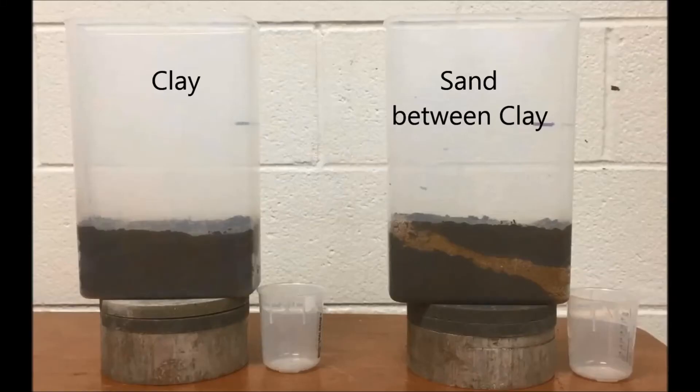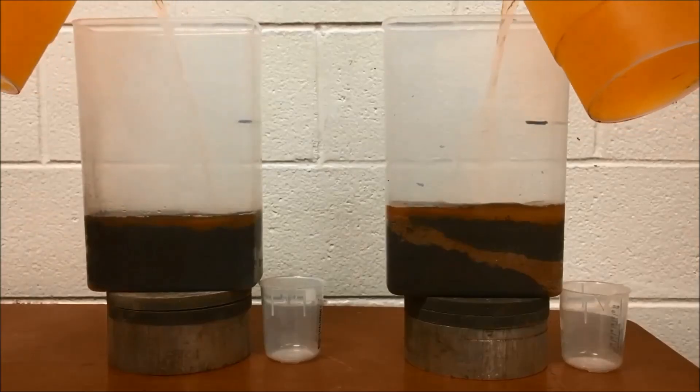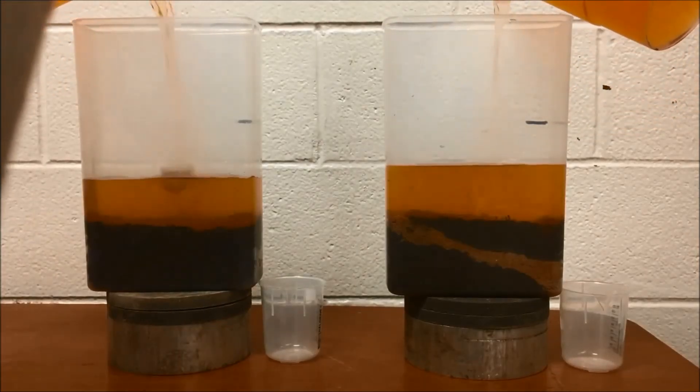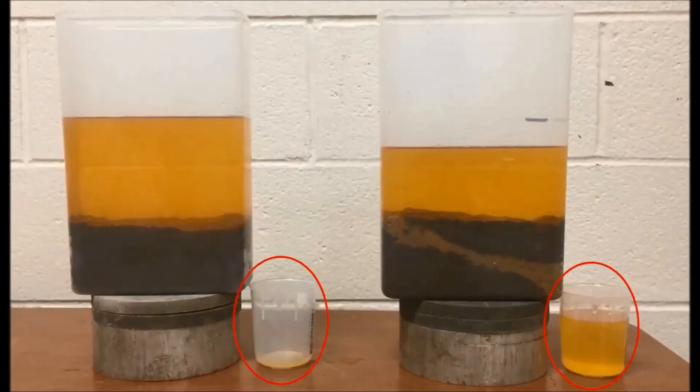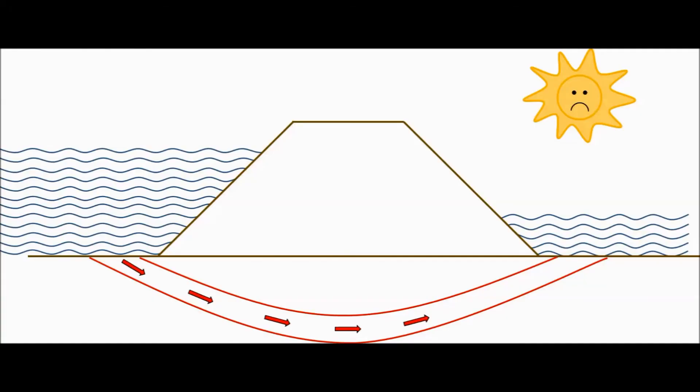In this experiment, we have two boxes, one filled with only clay and the other with a sand layer sandwiched between clay layers. When water is added, the presence of a sand layer leads to the faster escape of the water. We can easily see the amount of water stored in the beaker after a period of testing and also the lowering of the water level in the right box.